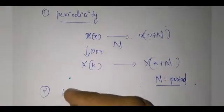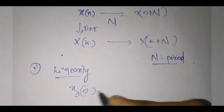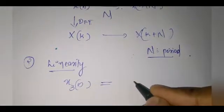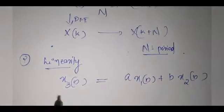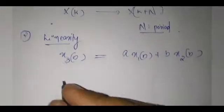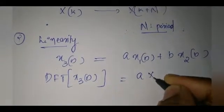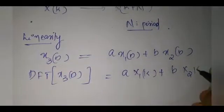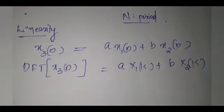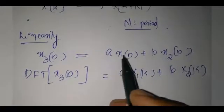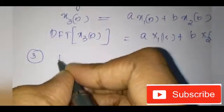The second property is linearity, which states that if x3(n) is a linear sum of two sequences — a·x1(n) + b·x2(n) — then the DFT of x3(n) is equal to a·X1(k) + b·X2(k). That is, the DFT of the input is the linear sum of the DFTs of the two sequences x1 and x2.